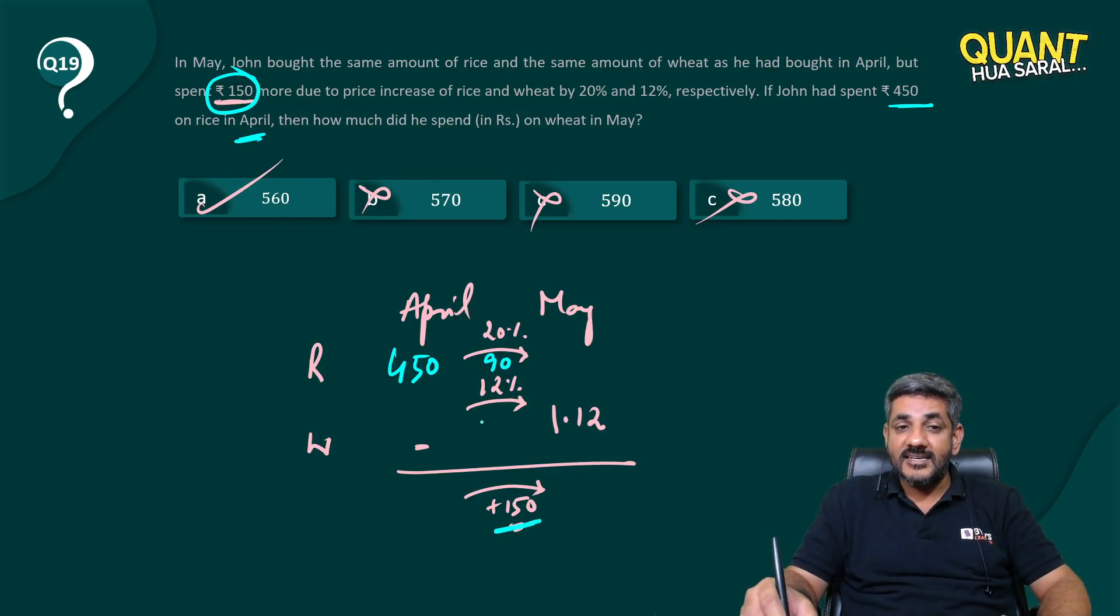The total increase is 150. If out of 150, 90 is the increase there, 60 must be here. 60 is 12 percent of something. That 12 percent must be 500. And if 500 increased by 60, it must have become 560 in May.